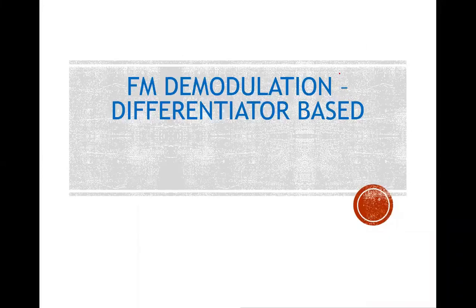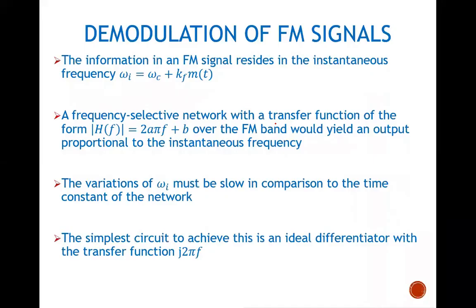The second method of demodulating an FM signal is discussed in this video. This method is based on differentiation — we will see how a differentiator can be used to demodulate an FM signal. The information in an FM signal resides in the instantaneous frequency omega_i, which is equal to the carrier frequency plus the deviation that depends upon the baseband signal m(t). kf is the multiplying factor of the FM modulation.